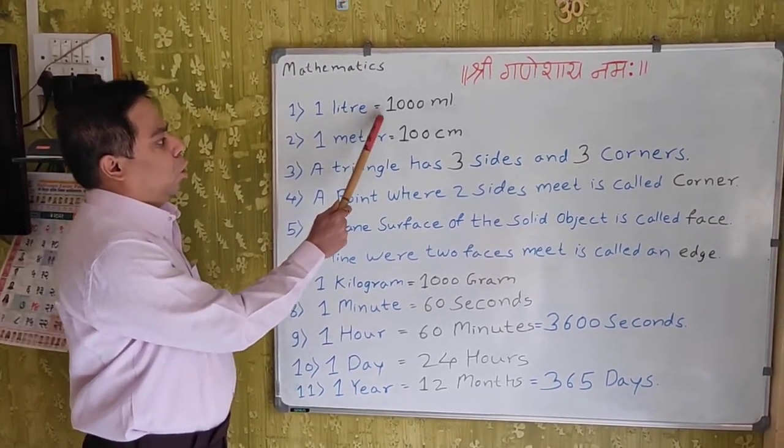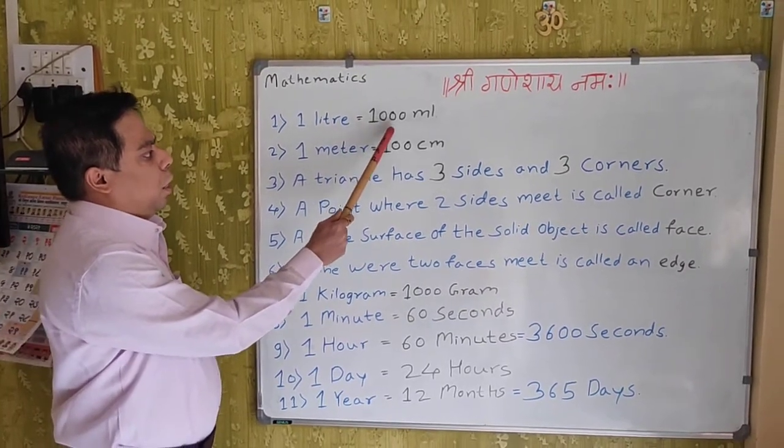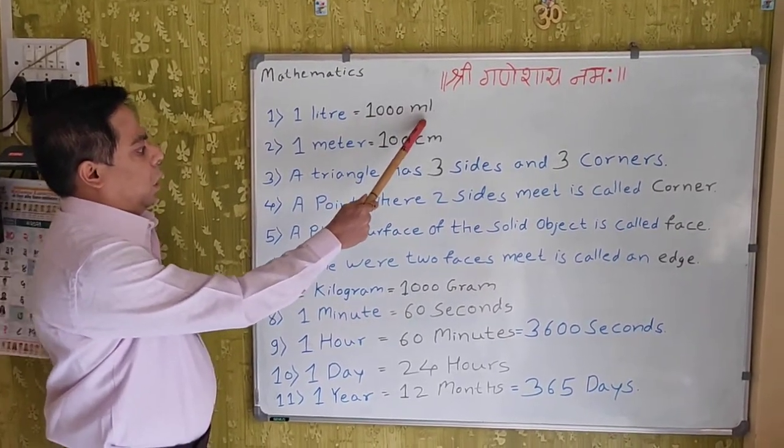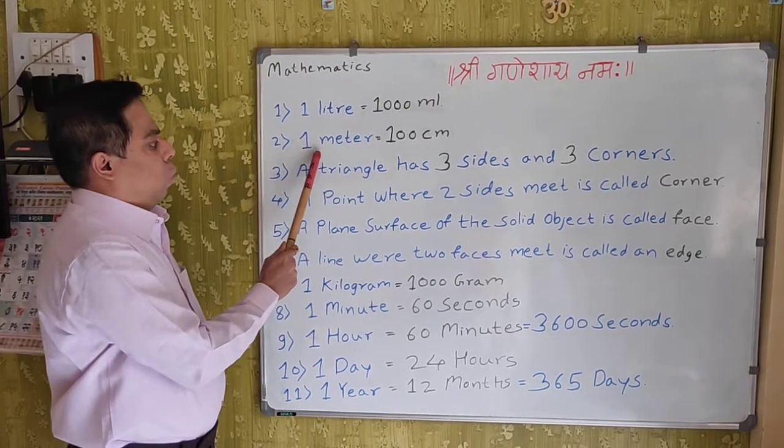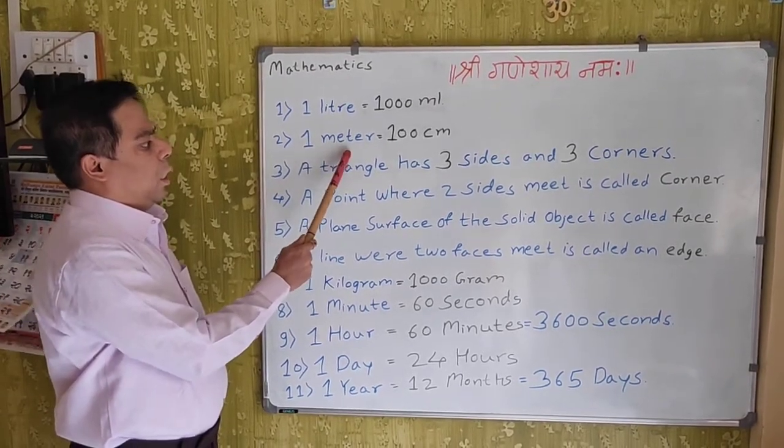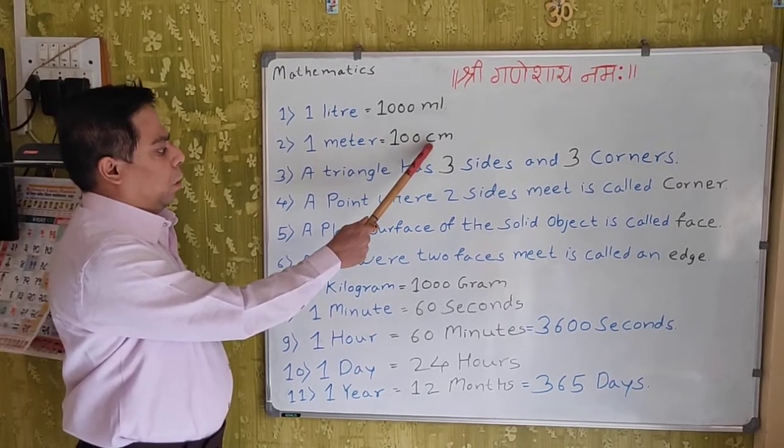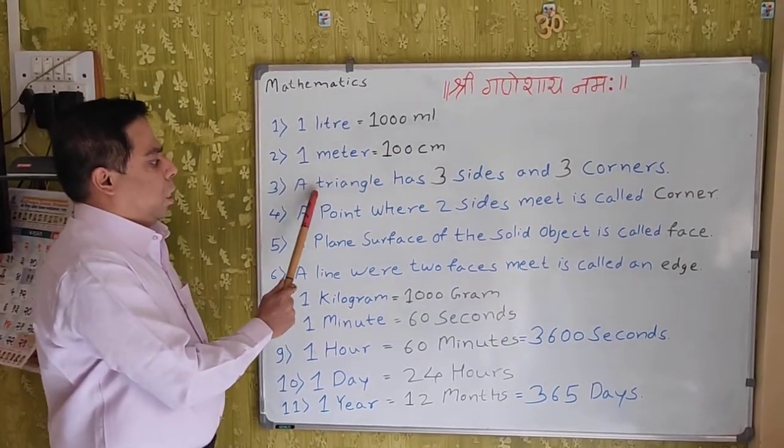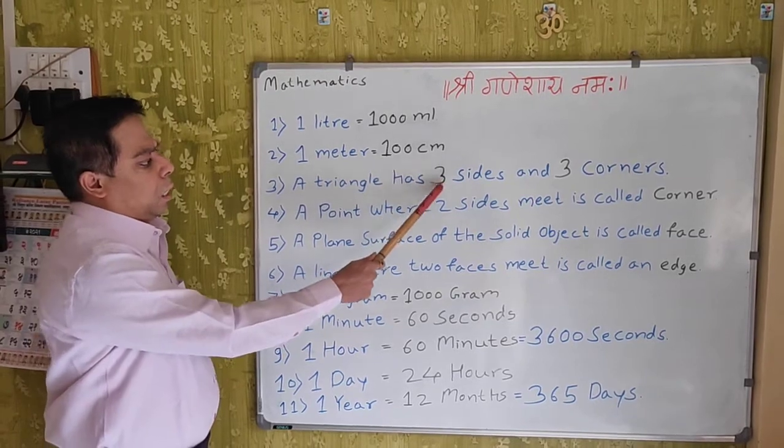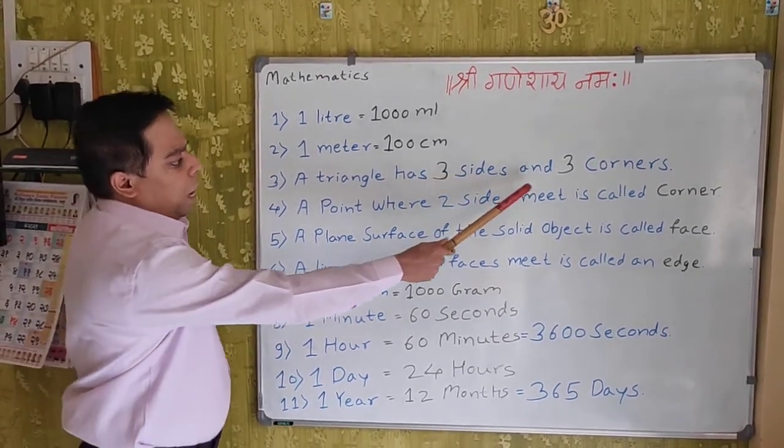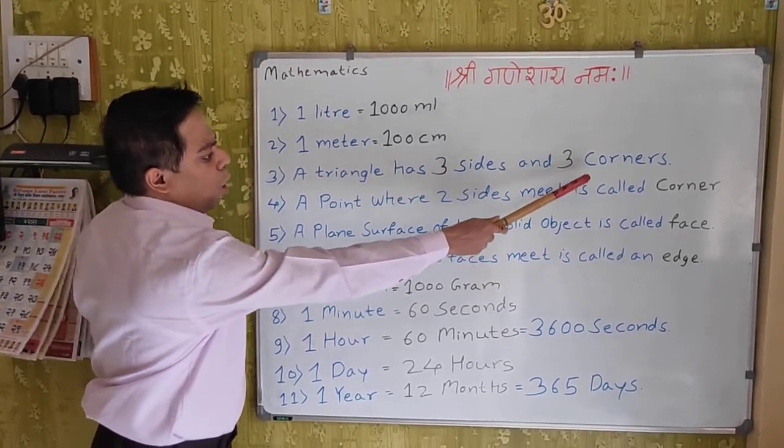1 litre is equal to 1000 milliliter. 1 meter is equal to 100 centimeter. A triangle has 3 sides and 3 corners.